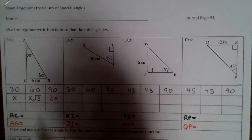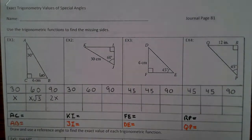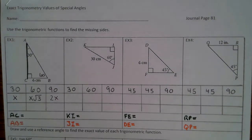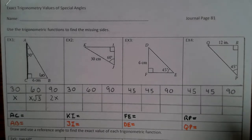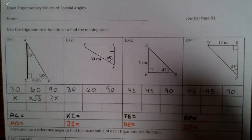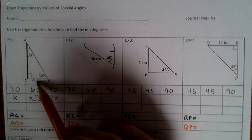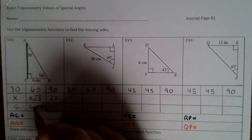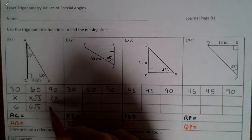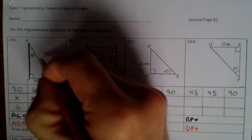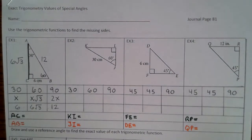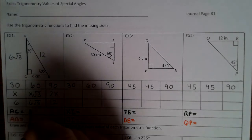We're looking for AC and AB. Let's color code AC as green and find AC first. Before we can do that, we need to find the side lengths of the triangle. Across from 30 is 6, so x is 6. That means this is 6 square root of 3, and 2 times 6 is 12. So AC is 6 square root of 3.